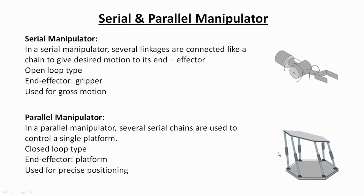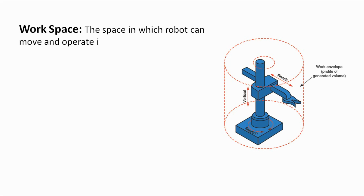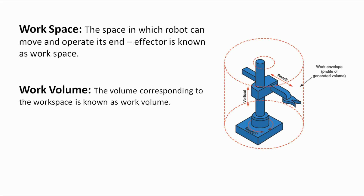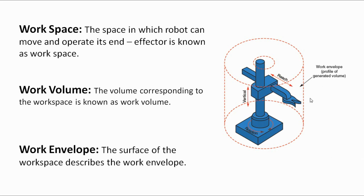Before moving to the next topic, you need to understand three terms. First one is workspace. In the diagram you can see that the end effector can move within a cylinder. This cylinder is the workspace of the manipulator. The corresponding volume of the cylinder is known as the work volume, and the surface of this cylindrical workspace describes the work envelope.